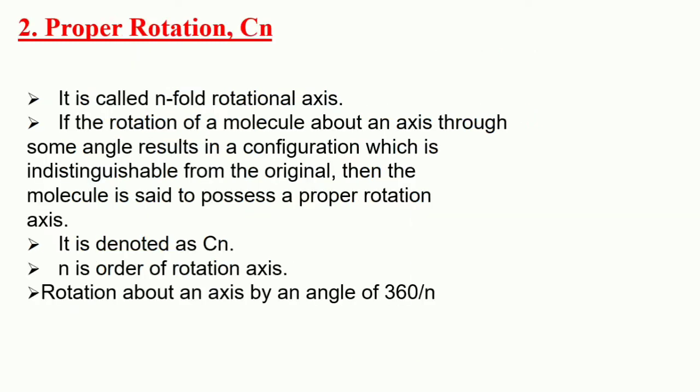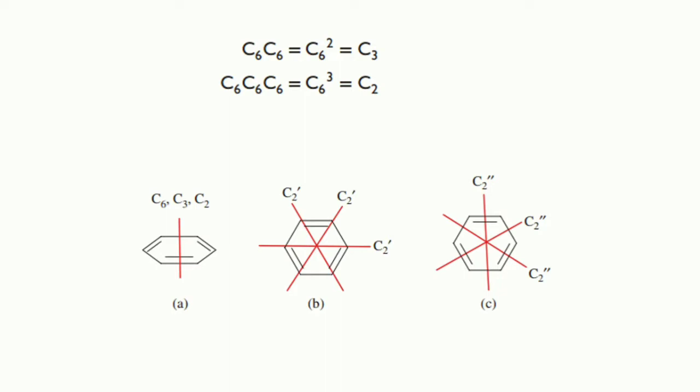Proper rotation is abbreviated by the symbol Cn, where n equals the rotation around the axis by 2π/n radians. We know the total rotation angle is 360°, so it is 360/n degrees. For example, the benzene molecule has a C6 proper rotation axis that passes directly through the center of the ring as shown in figure A. A rotation of the molecule by 60° moves each carbon atom into its neighbor's original position.